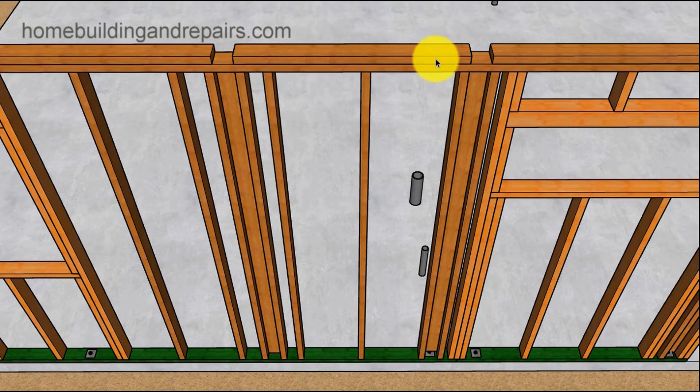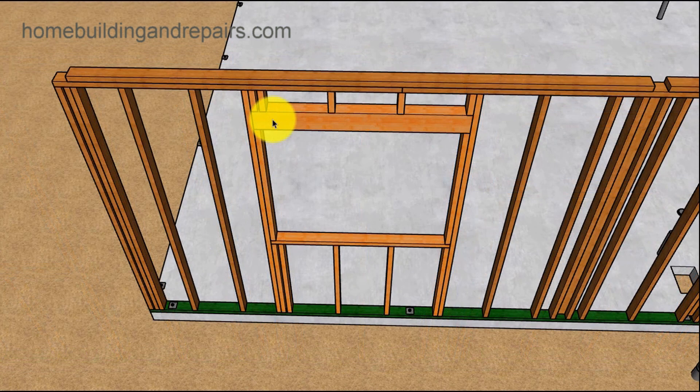This would be the area that's going to be in bedroom number one. This would be the closet here. Going to have two walls intersecting here. Bedroom number one, the window here.